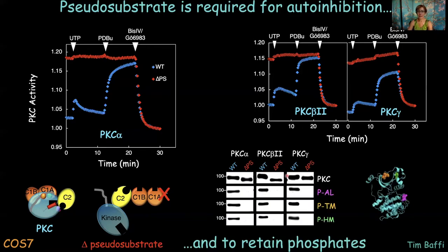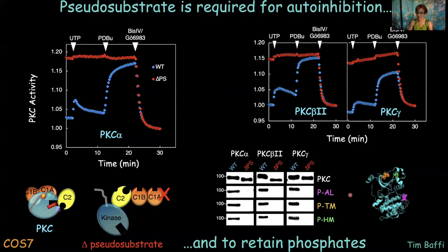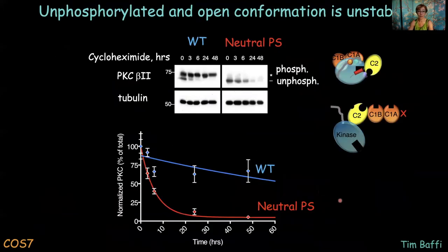We were very surprised that PKC constructs deleted in the pseudosubstrate, although fully functionally active, have no phosphate at any of the priming phosphorylation positions. With phosphospecific antibodies, we have nice labeling of the wild-type enzyme, but each constitutively active isozyme lacking a pseudosubstrate has no phosphate at those positions. We know the phosphate must have been present initially, because if we put alanine at these phospho-acceptor positions, we do not make an active PKC. So the phosphates have gone on, but then they have been removed.